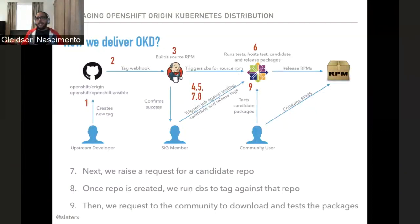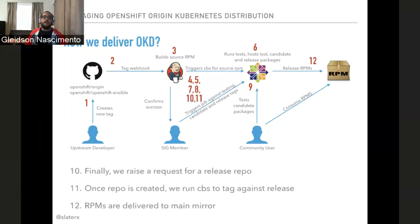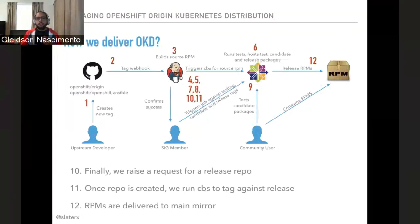We run CBS against the new repository. Then we go to the community and say, would you mind helping us evaluate whether those RPMs are good enough? When the community gives us positive feedback, we run CBS one last time to populate the main repository, which will then be mirrored across the internet.